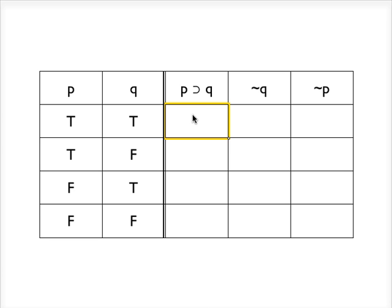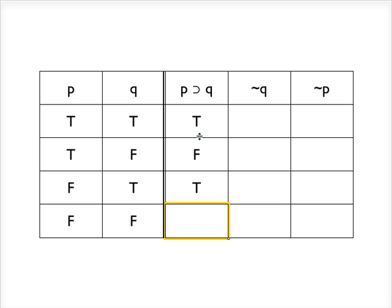The next step is to fill in the columns. To the right of the reference columns are the two premises and the conclusion. We're going to fill in the truth values for those premises using the truth functional or propositional connectives. A conditional is true in every case except where the antecedent P is true and the consequent is false. So this will be true, this will be false — it's the only case in which it's false — and these will both be true.